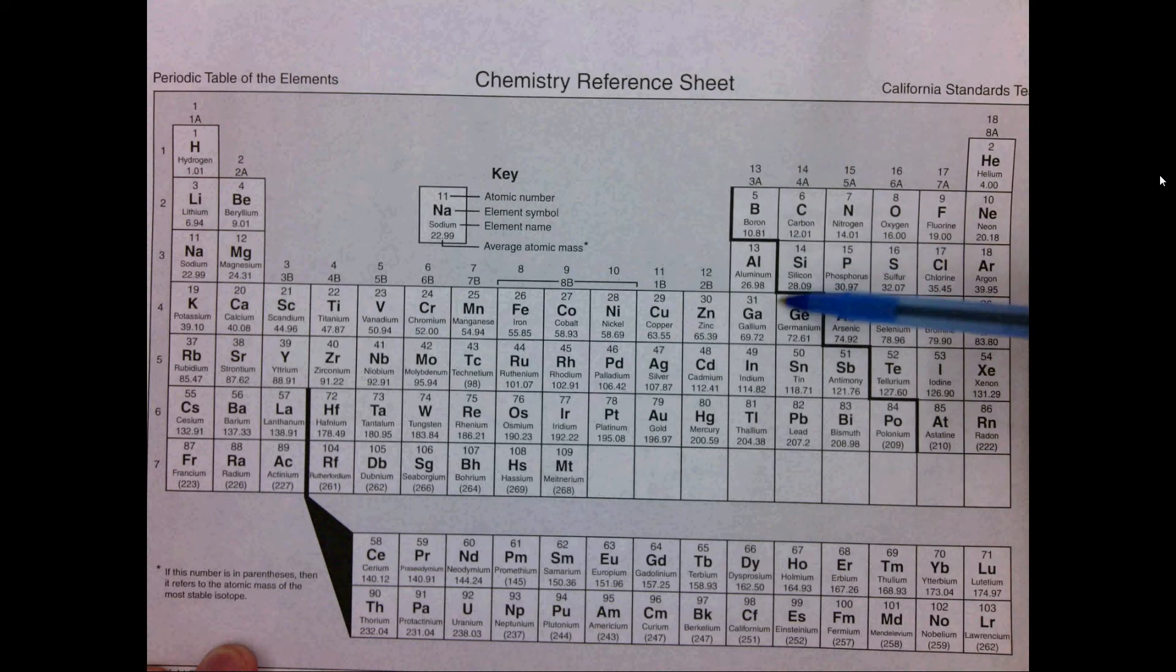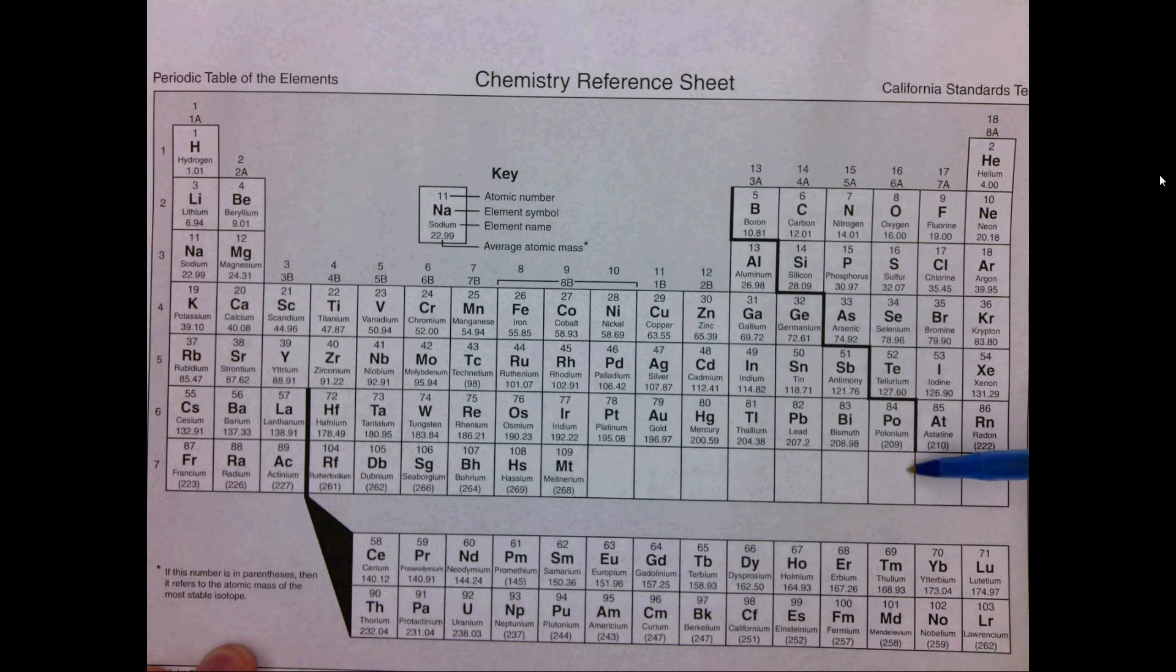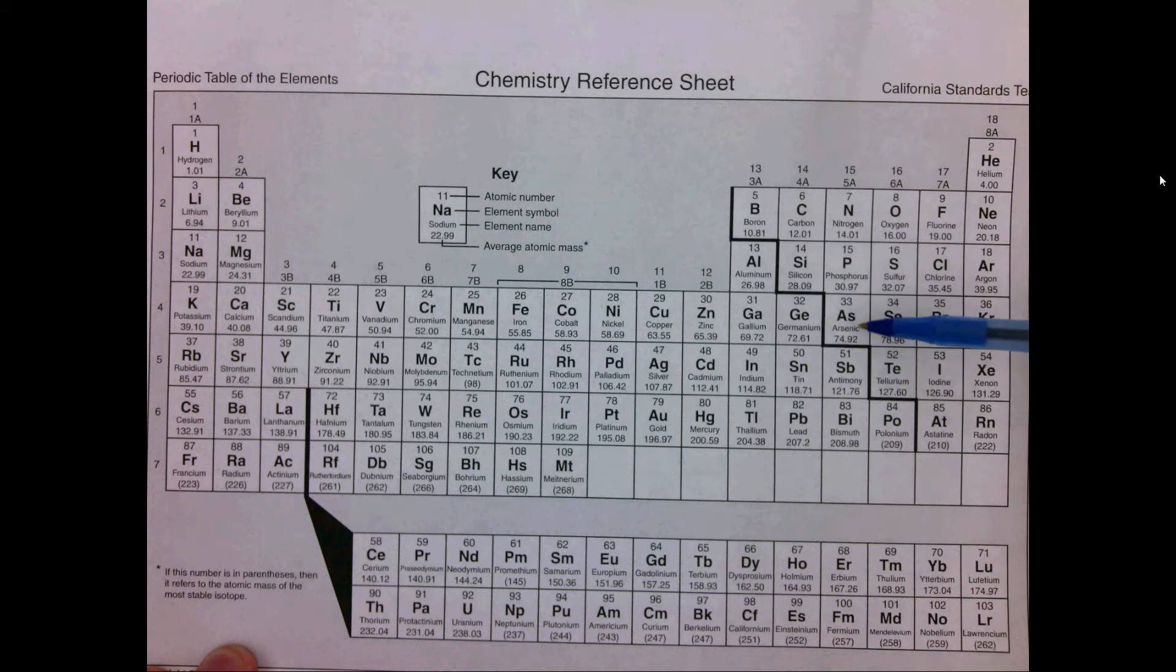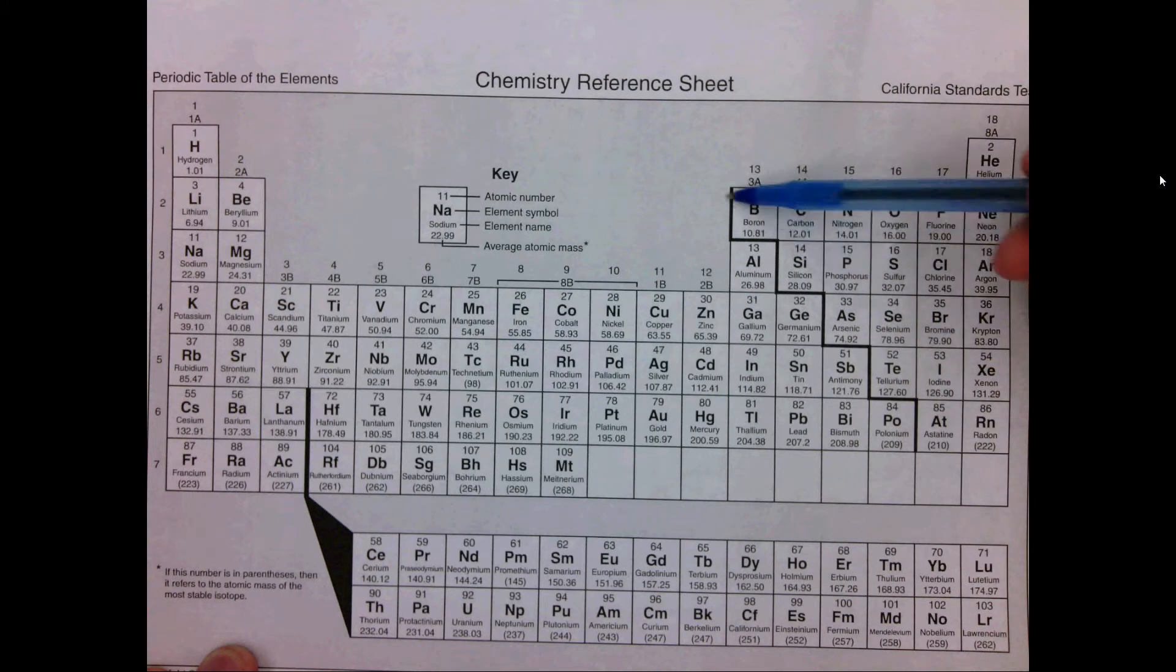Everything touching this bolded line on two sides, such as boron and silicon and germanium and arsenic and antimony and tellurium and polonium, are considered to be metalloids. So these are your metalloids.